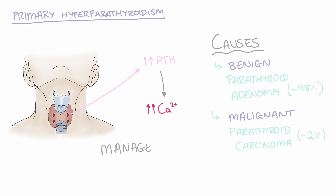A parathyroid adenoma can be treated pharmacologically through the use of cinacalcet, which is a calcimimetic. This means it mimics the actions of calcium and therefore inhibits the release of parathyroid hormone from chief cells. A parathyroidectomy — removal of one of the parathyroid glands — may be indicated if there is a malignancy or if PTH levels are dramatically elevated.